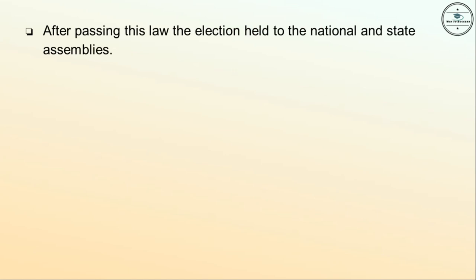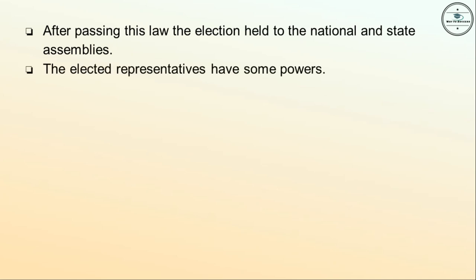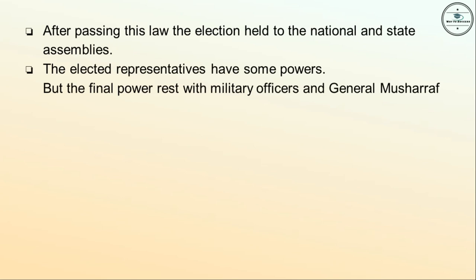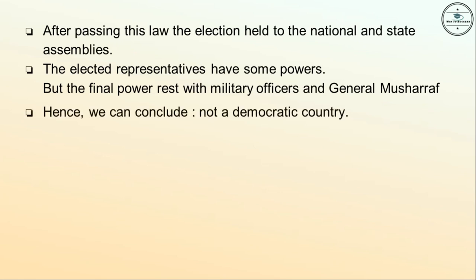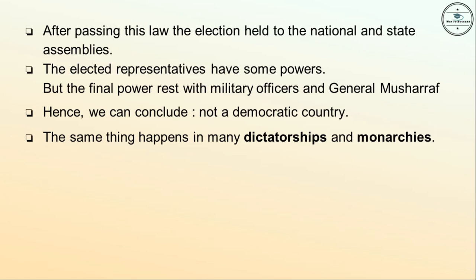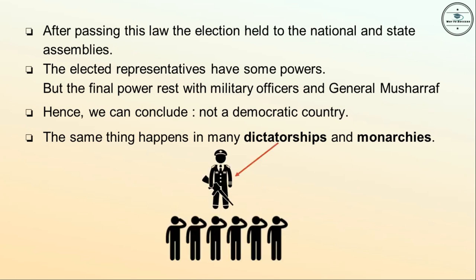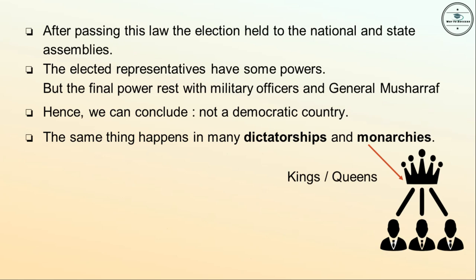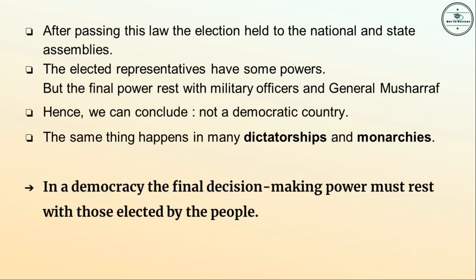The work of the civilian cabinet was supervised by a National Security Council dominated by military officers. After passing this law, elections were held to the national and state assemblies. The elected representatives had some powers, but the final power rested with military officers and General Musharraf. Hence, Pakistan was not a democratic country. The same thing happens in many dictatorships and monarchies — a dictatorship is ruled by one person, and a monarchy is ruled by kings and queens. This gives us the first feature: in a democracy, the final decision-making power must rest with those elected by the people.